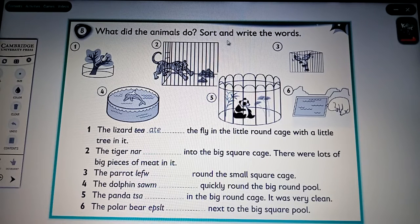Number 8. What did the animals do? Sort and write the words. Yes. The lizards eat. The fly in the litter runs. Catch with a litter. Little tree in it. Okay. Look at these pictures. Number 2. The tiger. What is it? Ran. Into the big square cage. There were lots of big pieces of meat in it. Okay. Number 3. The parrot. What is it? Flew round the small square cage.